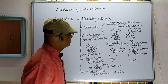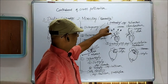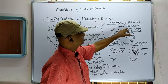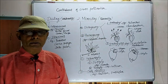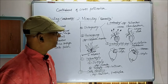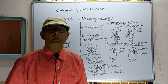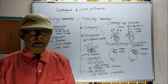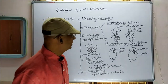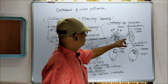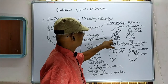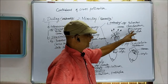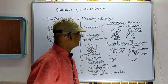Dicogamy is further subdivided into protandry and protogyny. Protandry example: Helianthus and Clerodendron. In Helianthus and Clerodendron, the anther matures first — the stamen matures earlier than the stigma. The two diagrams given here show the first diagram with the anther maturing first, and the stigma maturing later. This is the example for protandry.